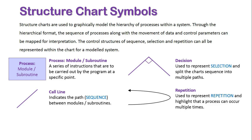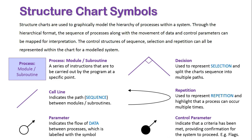Then we have two similar looking symbols. We have a parameter which indicates the flow of data between the process, specifically what data is moving between the processes and it is labeled along with the symbol itself. Then finally we have a control parameter which indicates a criteria has been met, providing confirmation for the system to proceed. It highlights a flag, so something might have to be confirmed as occurring within a process before the program can continue.